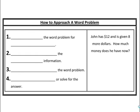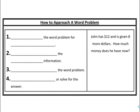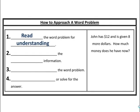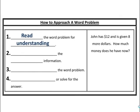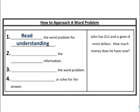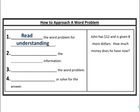We're going to walk through that today. First thing you need to do: read the actual word problem for understanding. This is probably the most important and the most overlooked step. A lot of students just try to jump to the numbers so they can jump to an answer. Let's look at the word problem: John has 12 dollars and is given eight more dollars — how much money does John have now?